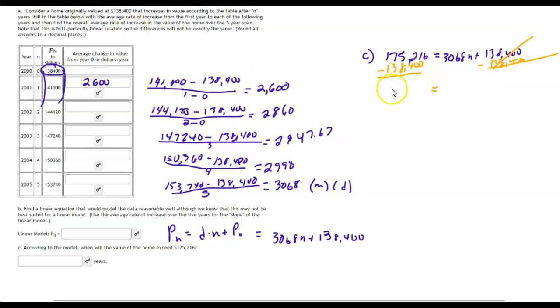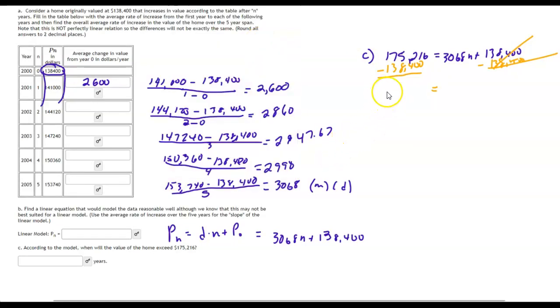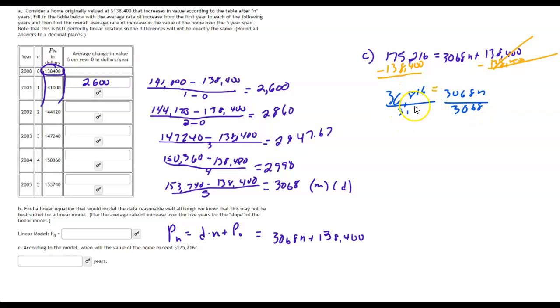And that will give us a new equation. So that equation becomes 36,816 is equal to 3,068N. Dividing both sides by 3,068, we get N by itself. And that will give us N is equal to, doing that division gives us 12.